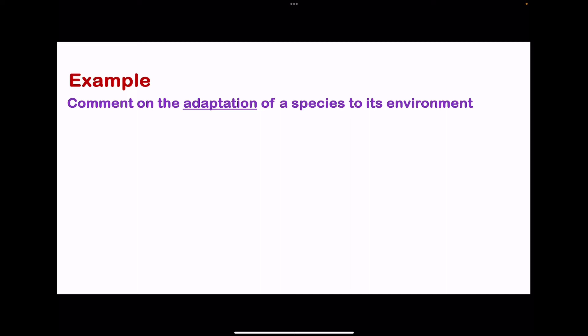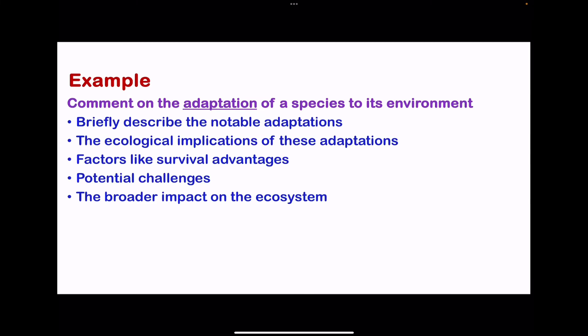The example we have here is comment on the adaptation of a species to its environment. Remember here we're talking about the adaptations. You could briefly describe the notable adaptations of that specific species. Since we talked about the environment, you talk about the ecological implications of these adaptations, factors like survival advantages, potential challenges, as well as the broader impact on the ecosystem.